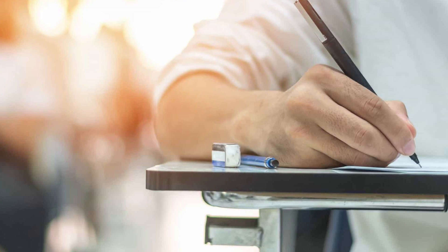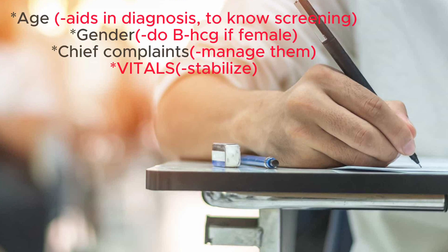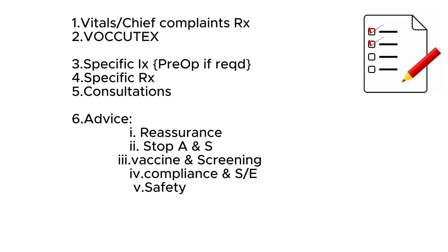Note down three things: age, gender, and chief complaint, plus the vitals. Having this information makes it very easy to work through — it will barely take 30 to 40 seconds. Once done, make sure you've completed vital management, chief complaint management, and then do VOCUTEX in all cases exclusively.